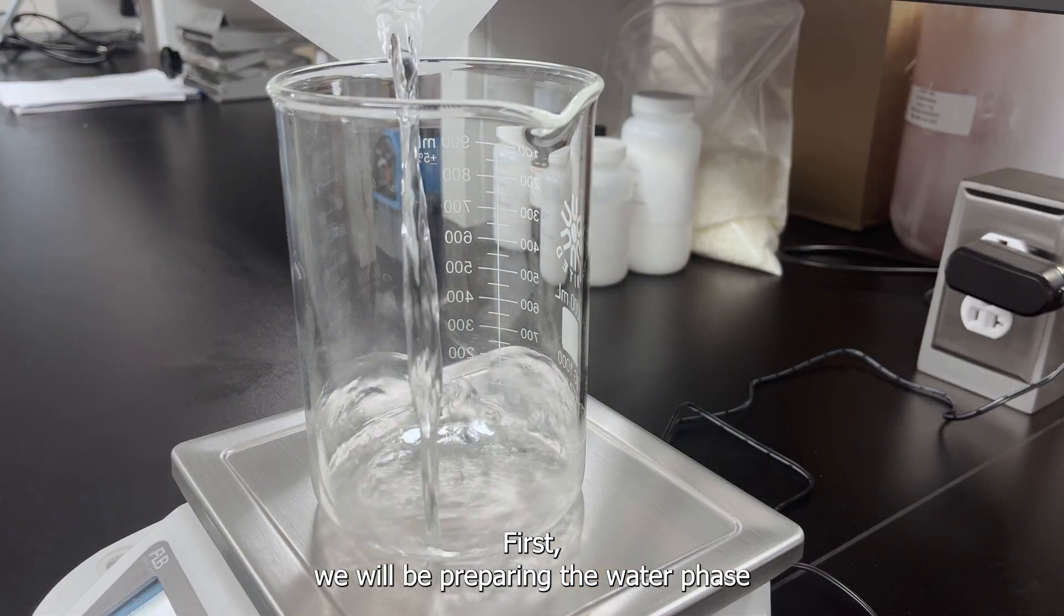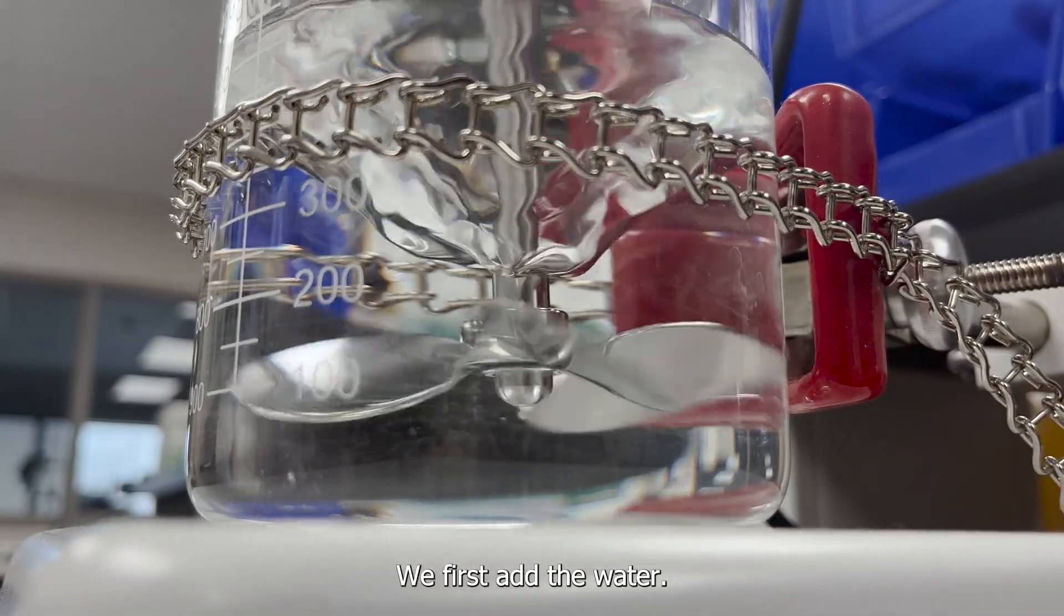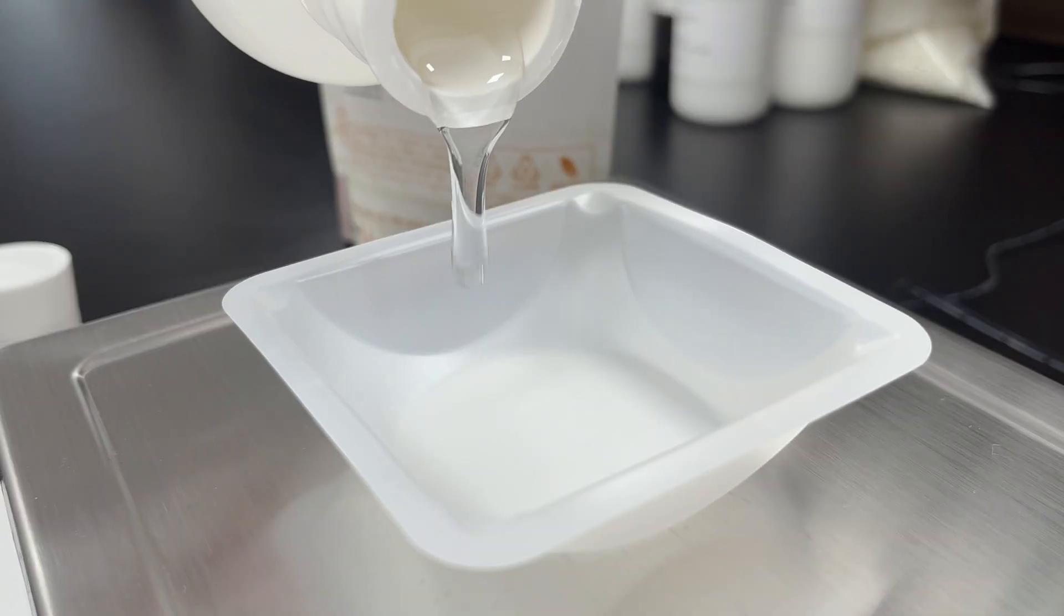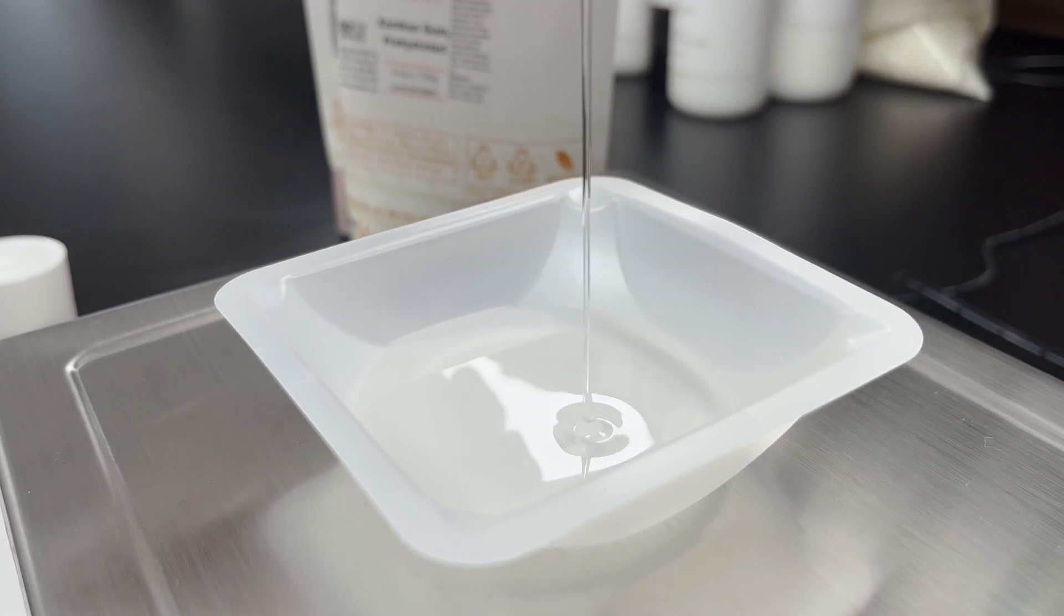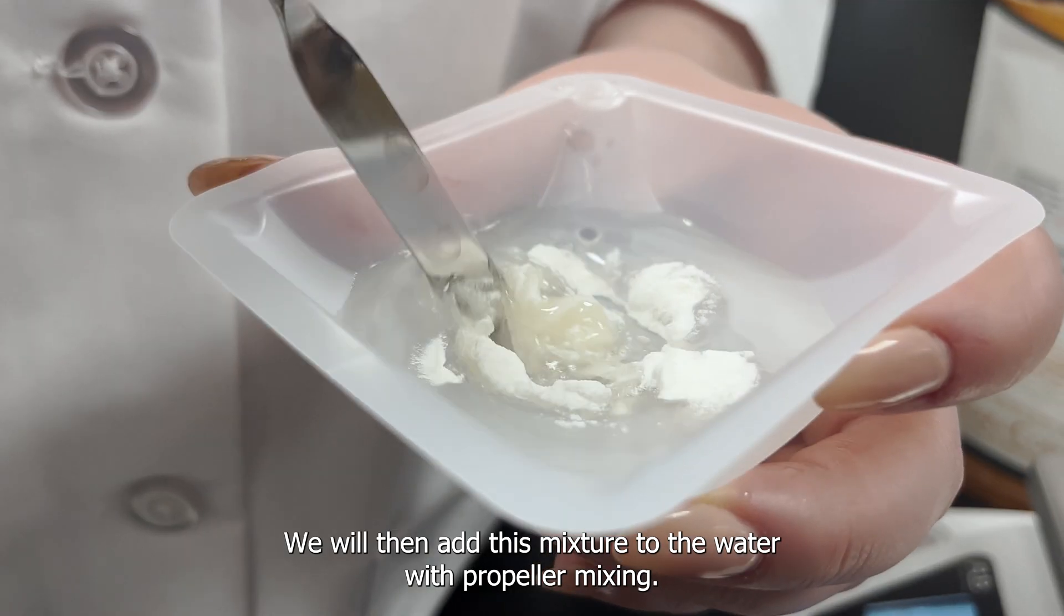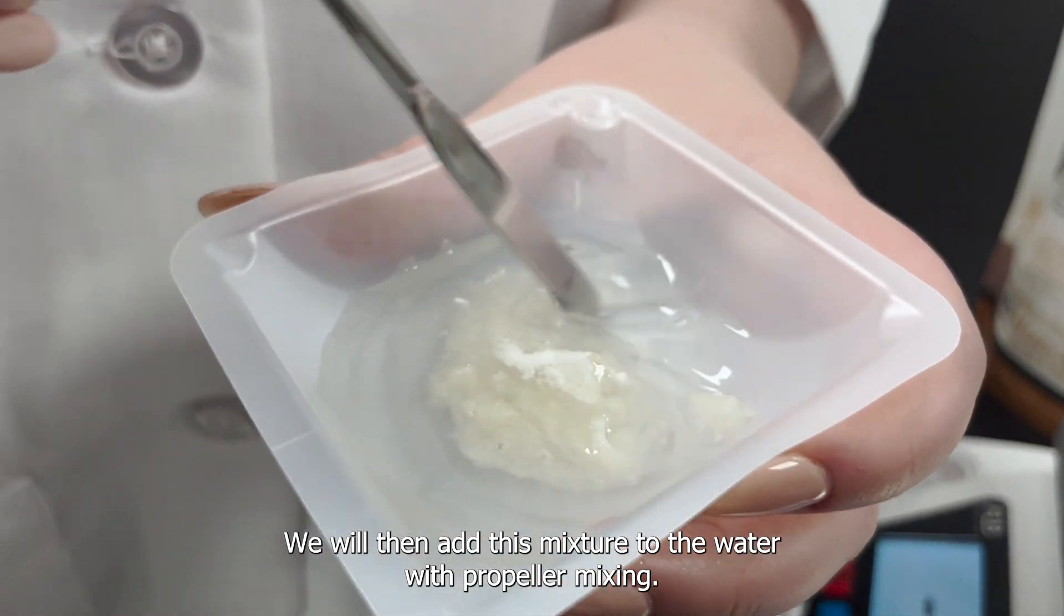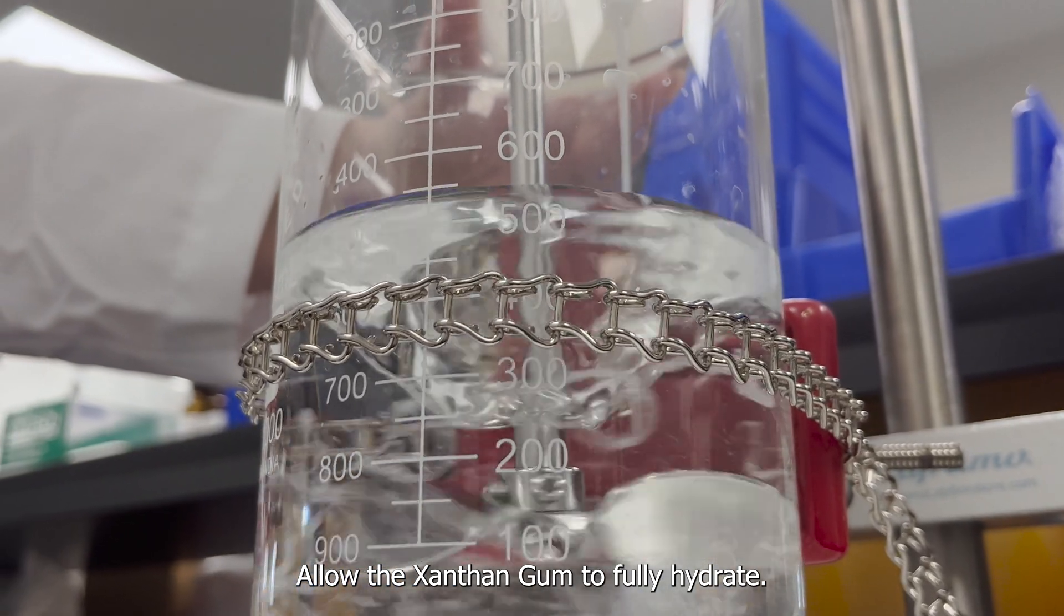First we will be preparing the water phase. To the main vessel we first add the water. Next premix the glycerin with the xanthan gum. This is to aid in its dispersion. We will then add this mixture to the water with propeller mixing. Allow the xanthan gum to fully hydrate.